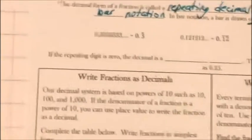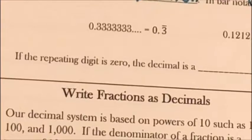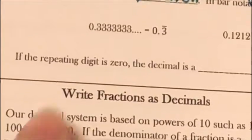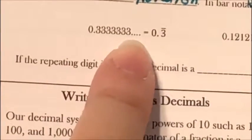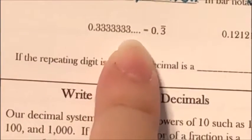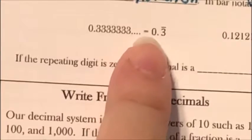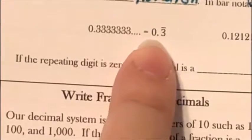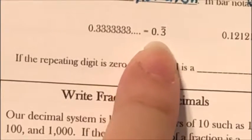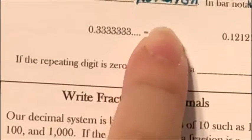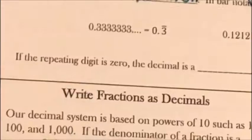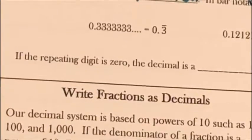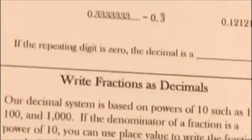Let's look at some examples. I have 0.333... — the dots mean it goes on forever. I would write this as 0.3 with the bar over just the one three, because that's the digit that repeats.